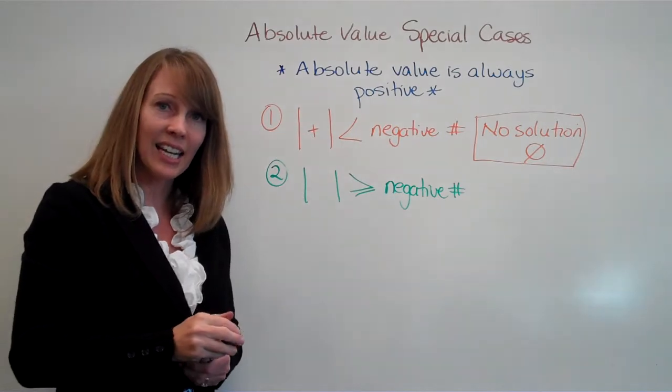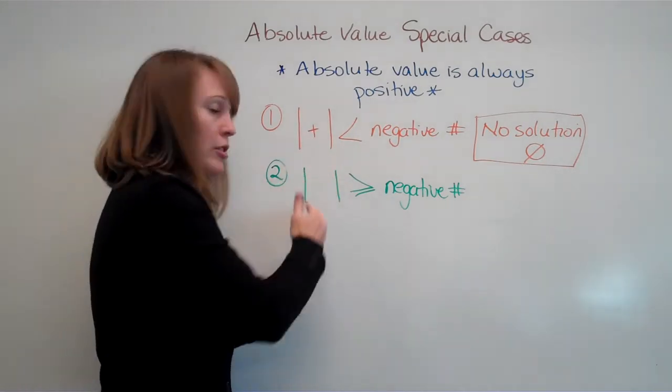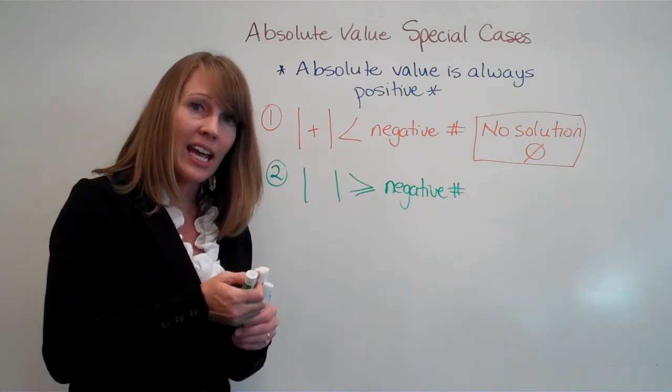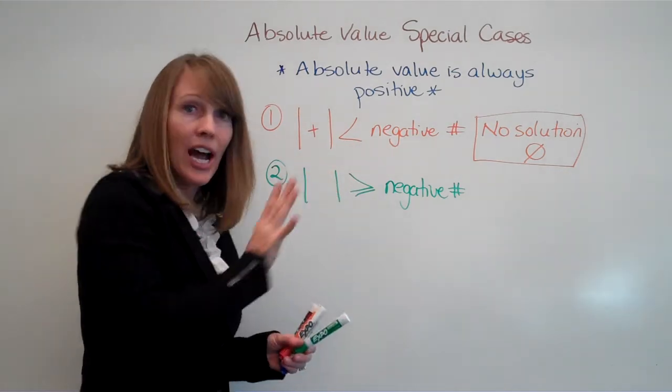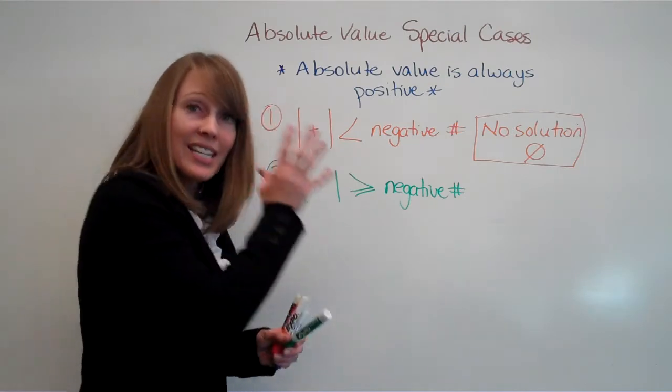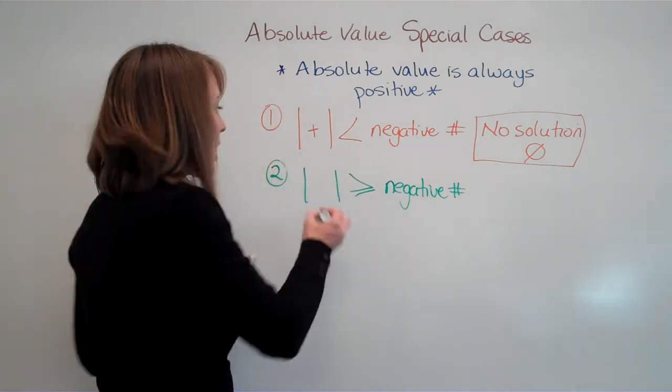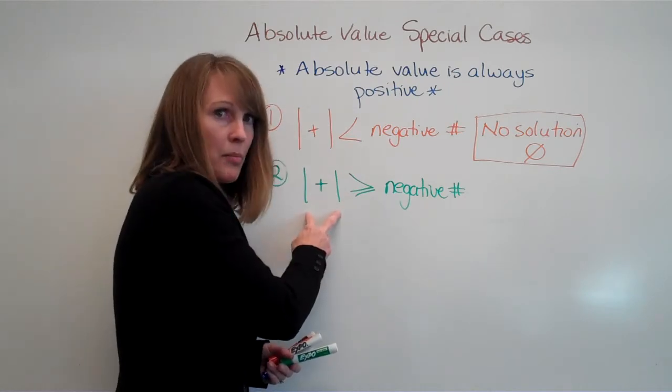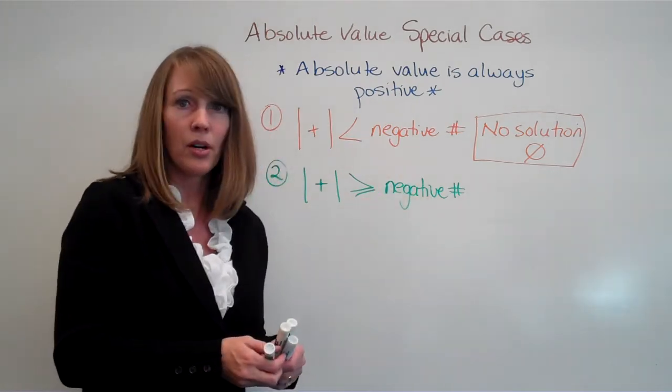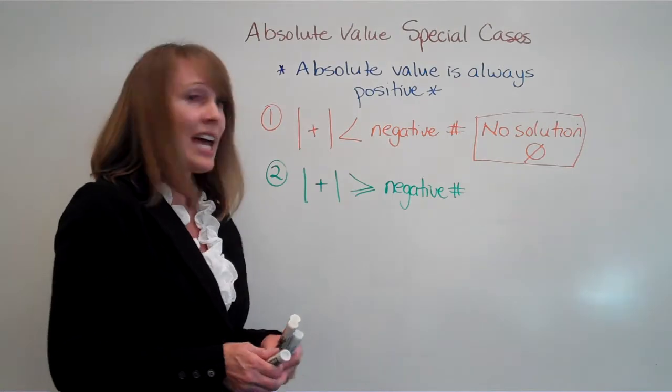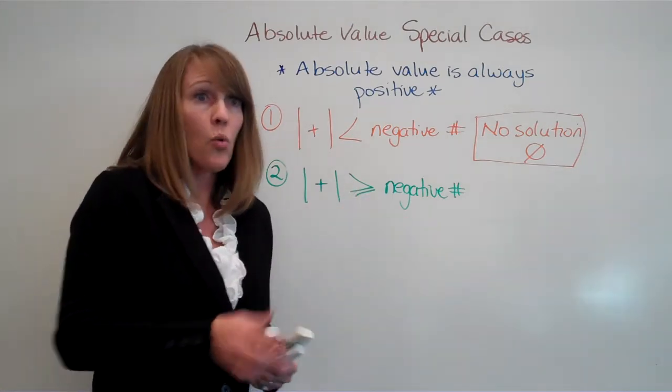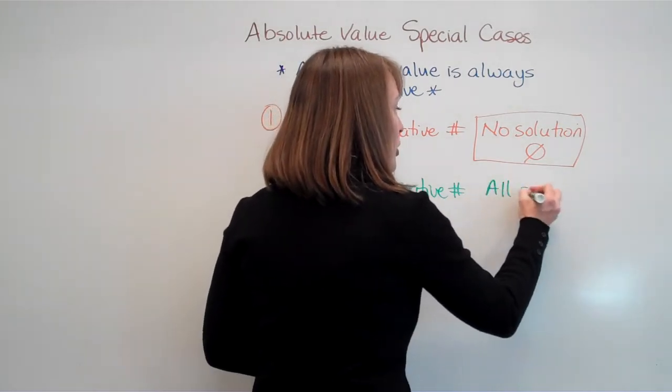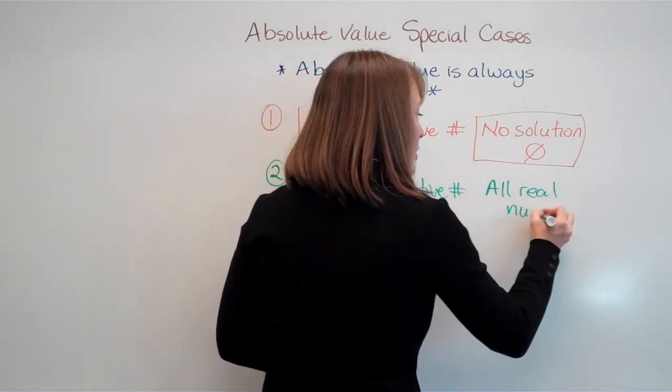Let's think about the second case. If we have an absolute value which is greater than or equal to a negative number. Now think again. This means anything that's in here, no matter how complicated the equation, when I take the absolute value, it's going to result in a positive number. And any positive number is going to be greater than a negative number. And so in this case, we're going to have all numbers work. No matter what I put in there, it's going to result in a positive number. And so all real numbers will be the solution.